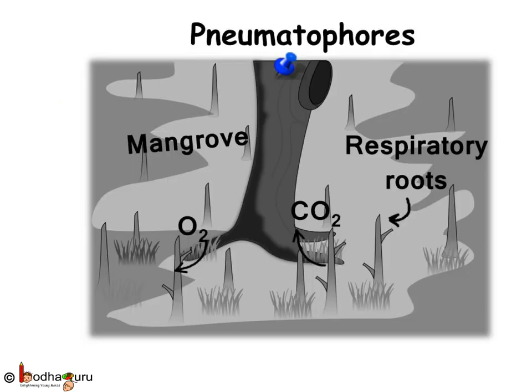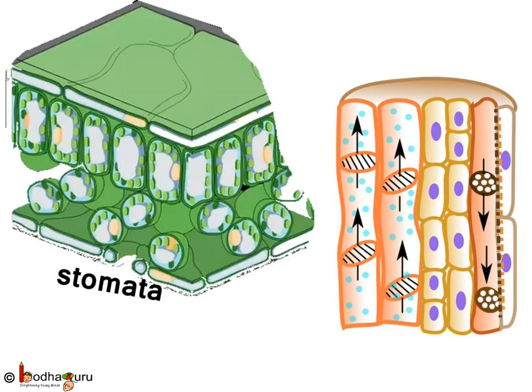Plant roots take oxygen through lenticels or through the surface of the root hair. But in saline, marshy, or waterlogged soil, the oxygen level is very low. So some branch roots grow vertically and come out of the soil to take in oxygen from air. We call these pneumatophores.